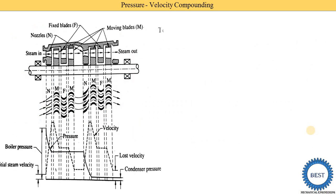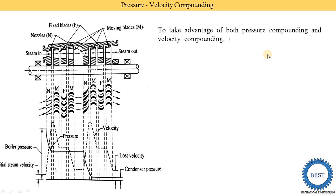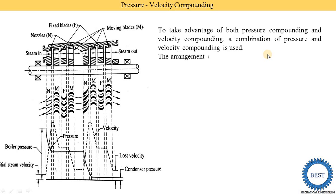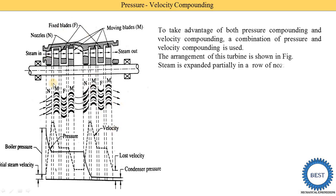To take the advantage of both pressure and velocity compounding, a combination of both is used. In pressure compounding and velocity compounding I already explained the advantages and disadvantages. If we want to take advantage of both, we use the combination of pressure and velocity compounding. The arrangement of this turbine is shown in this figure, which I already explained.